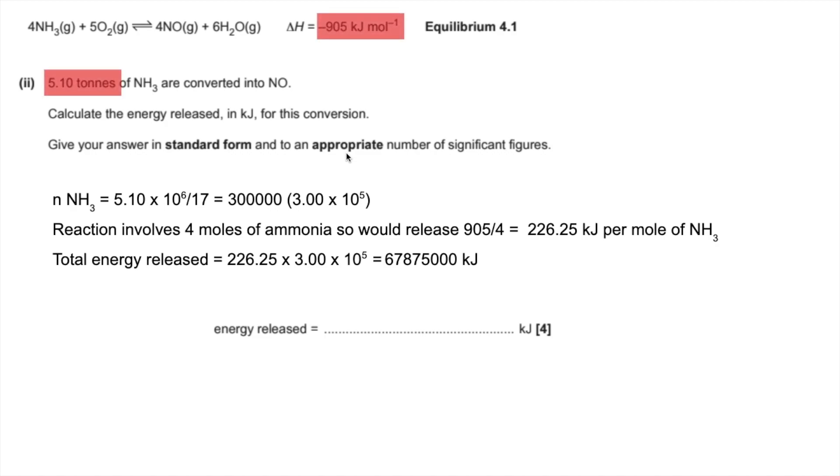That's got to go into standard form and the appropriate number of significant figures. We've got 3 significant figures for both bits of data, so I'm going to give the answer to 3 significant figures and we get 6.79 times 10 to the 7.